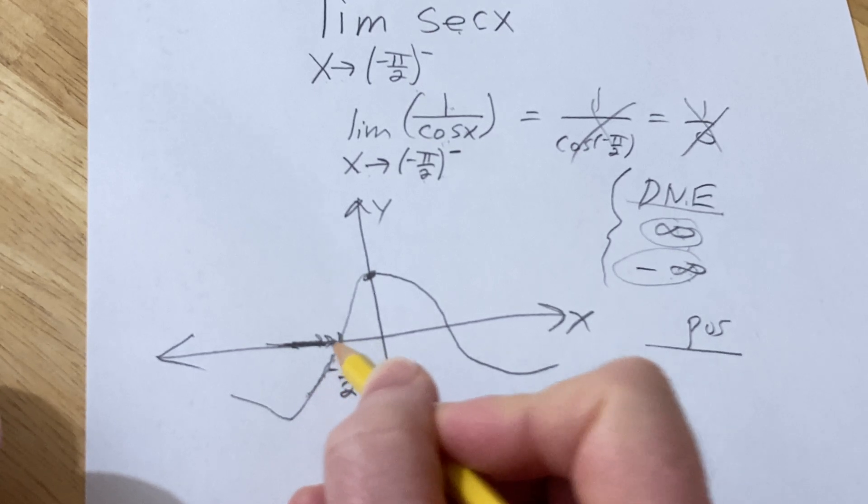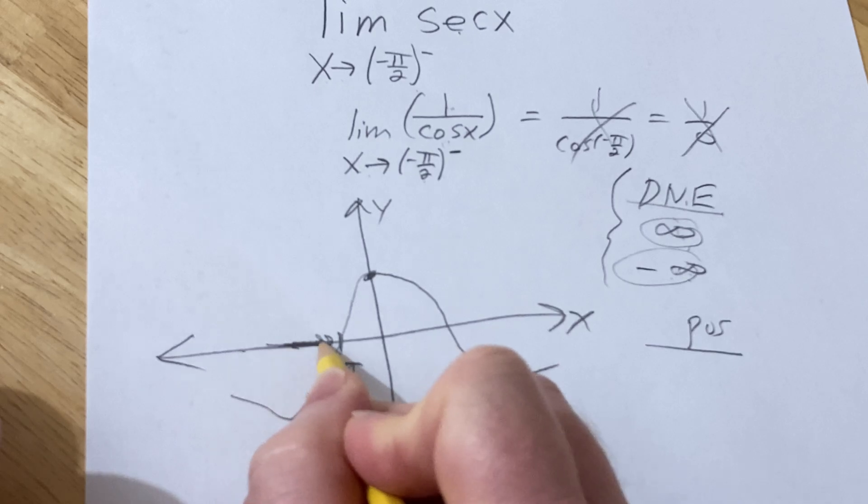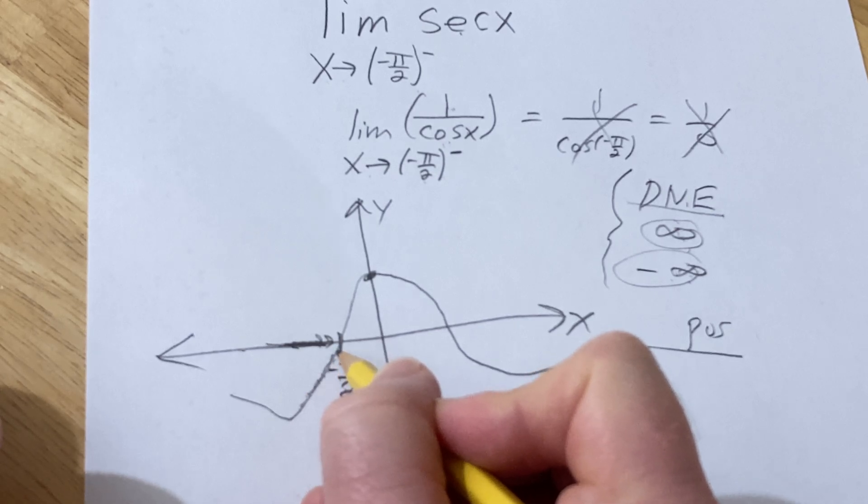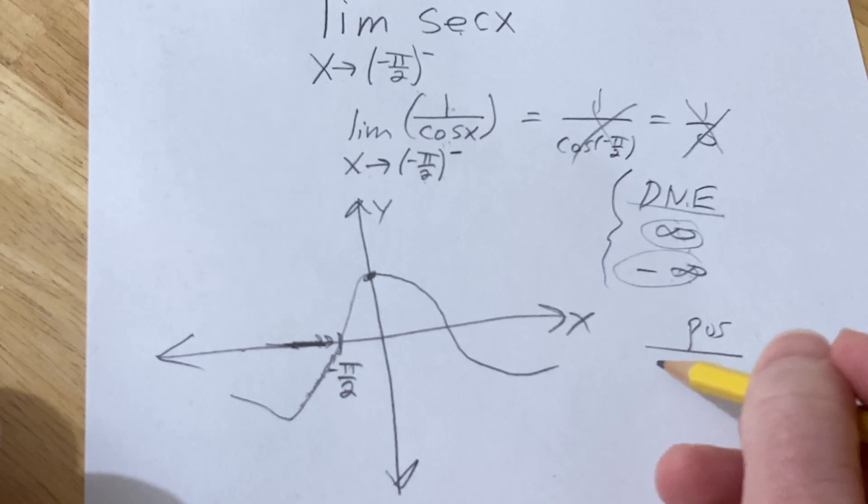But all of these y values are negative. So as x approaches negative pi over 2, cosine of x approaches 0, but it takes on infinitely many negative values as it gets infinitely close to 0. So you have negative very small numbers.